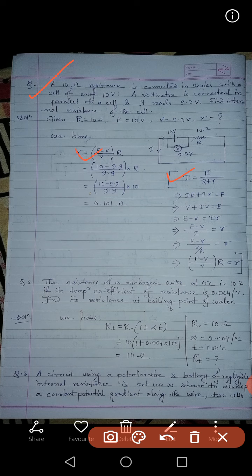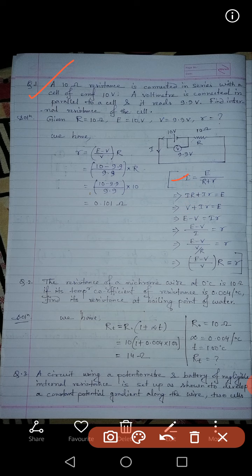We can obtain this formula from the standard equation. After cross multiplication, in place of IR we can write V, because V equals IR by Ohm's law. In Ohm's law we don't consider internal resistance or EMF — only external resistance and terminal potential difference. So in place of IR we write V, giving us E minus V equals Ir.